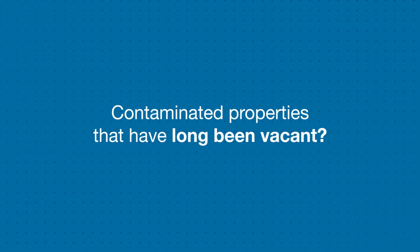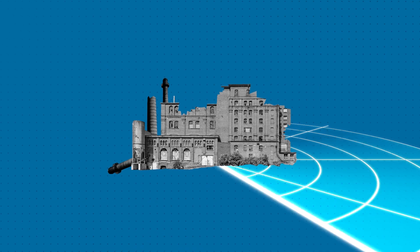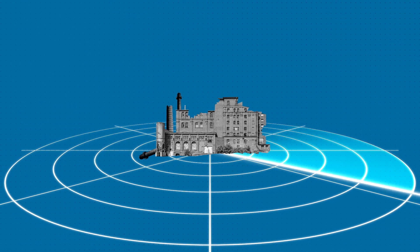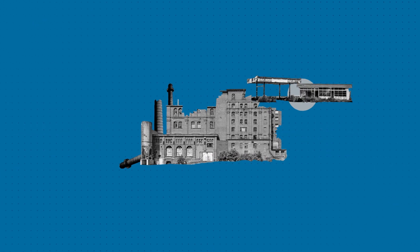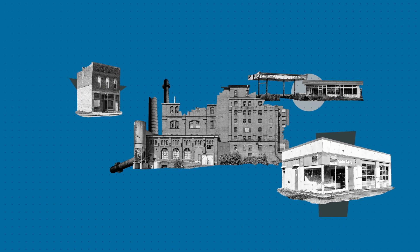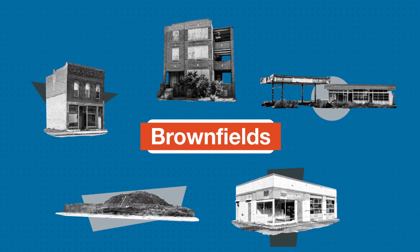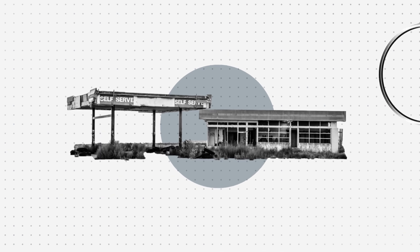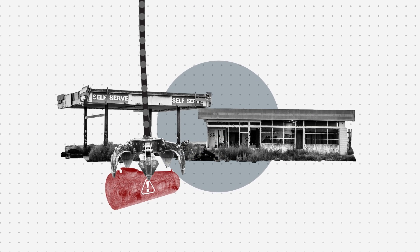When you think about contaminated properties that have been vacant a long time, you might imagine an abandoned factory. But that's just the tip of the iceberg. The scope of contaminated or potentially contaminated land, known as brownfields, is even bigger. Abandoned gas stations, car repair shops, dry cleaners, vacant lots with illegal dumping, and even abandoned residential homes built before 1989 are all examples of brownfield properties. Before brownfields can be reused, communities need to ensure they're safe through environmental assessment and, if they're contaminated, clean them up.